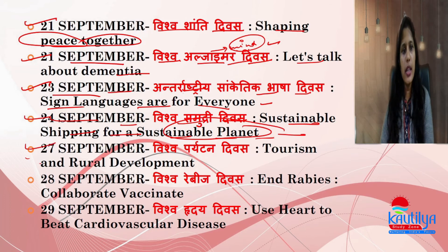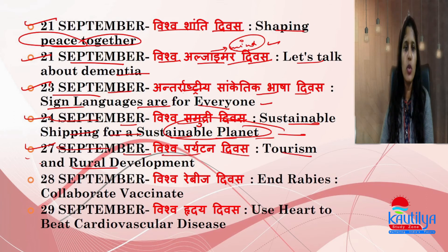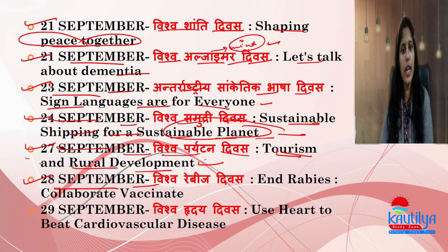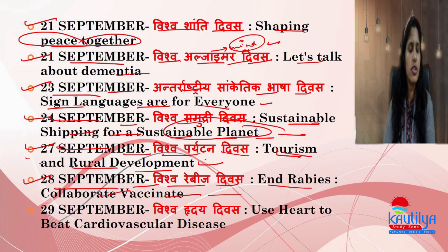27th September is World Tourism Day. The theme is focused on tourism and rural development — building tourism while also developing rural areas of the country.